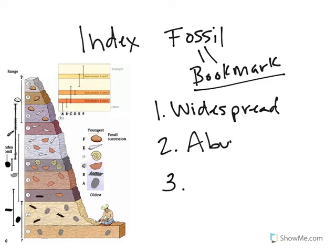Number two, it has to be abundant. It has to be easy to find. It can't be a hard one. And number three, it has to be short-lived, meaning it only lived in one geologic period or another.